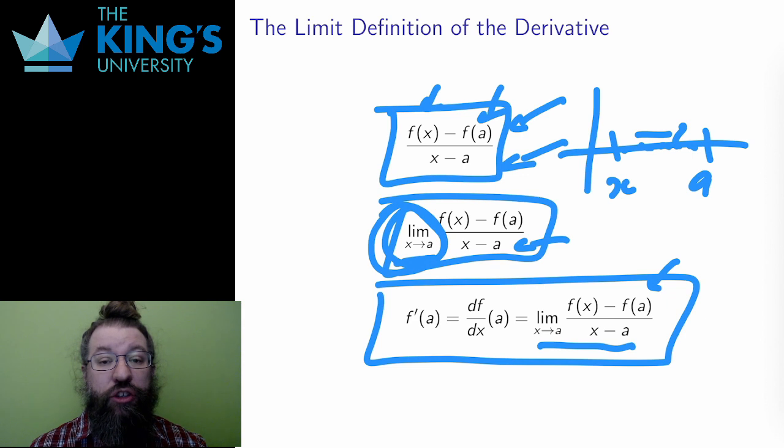I've already mentioned the notation for derivatives, but let me remind you. There are two common notations: f prime of a, with this little apostrophe called prime, and df over dx of a, this notation which looks like a fraction but isn't really.